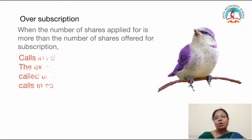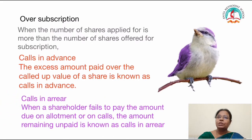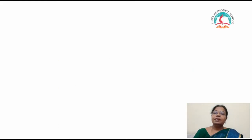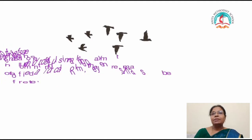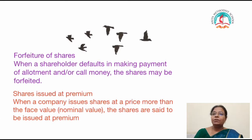Then we have studied about calls in advance. The excess of amount paid over the called up value of a share is known as calls in advance. Calls in arrears means when a shareholder fails to pay the amount due on allotment or on calls, the amount remaining unpaid is known as calls in arrears. When a shareholder defaults in making payment of allotment and/or call money, the shares may be forfeited. Premium means when the company issues shares at a price more than the face value or nominal value, the shares are said to be issued at premium.